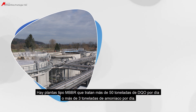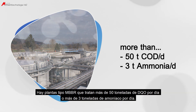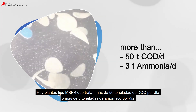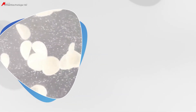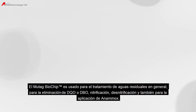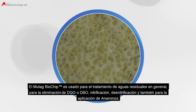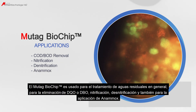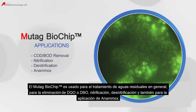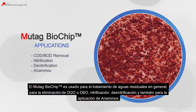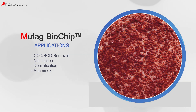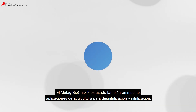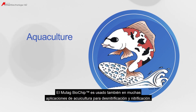These include MBBR plants treating more than 50 tons of COD per day or more than three tons of ammonia per day. The Mutag Biochip is used for water and wastewater treatment in general for COD or BOD removal, nitrification, denitrification, and also for Anammox applications. It is also used in many aquaculture applications for denitrification and nitrification.